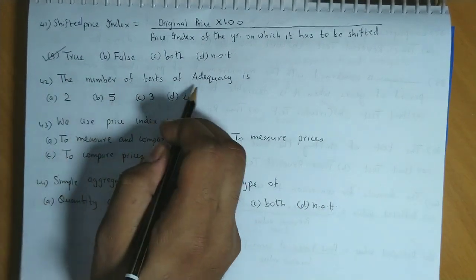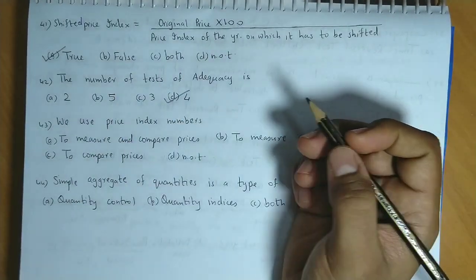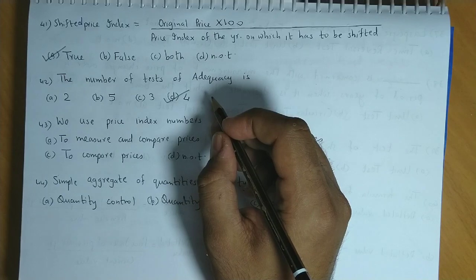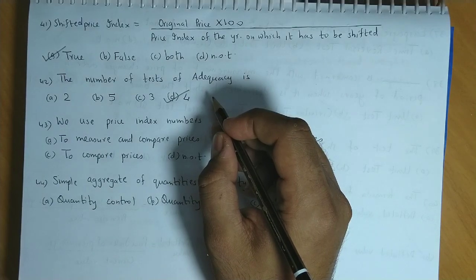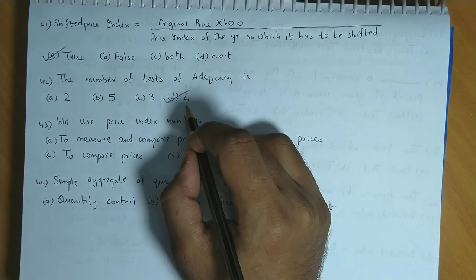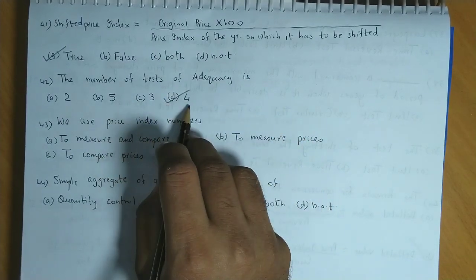The number of tests of adequacies for index number is 4. Right, 4 adequacies ki test hoti hai: Unit test, factor reversal test, time reversal test, circular test. So the test of adequacies of index numbers hoti hai 4. So the answer is option D, 4.